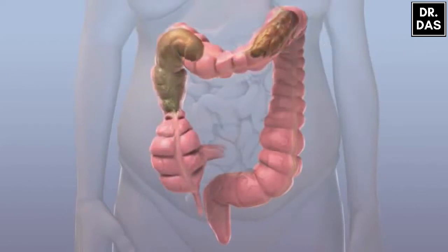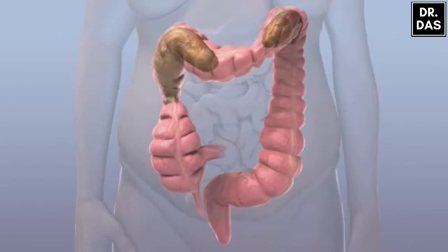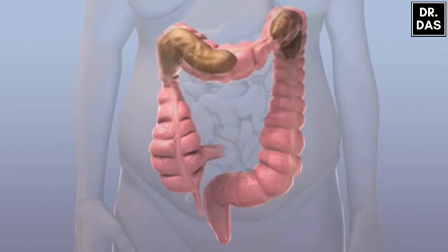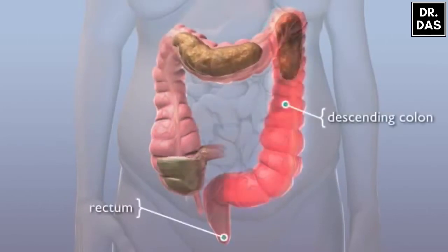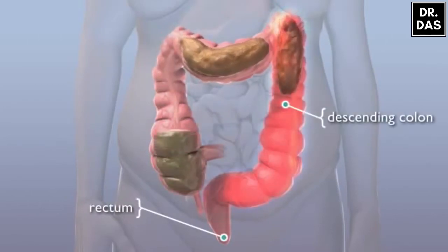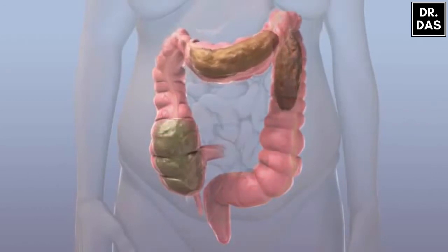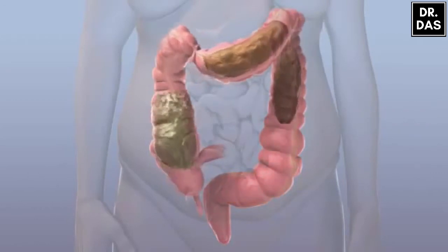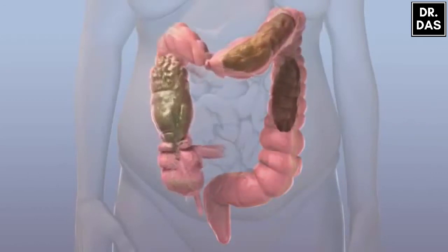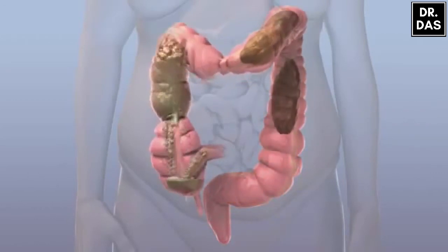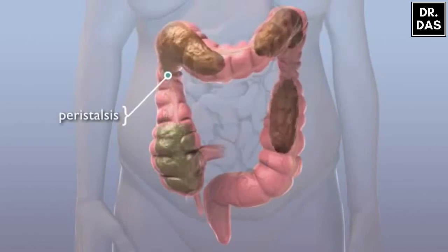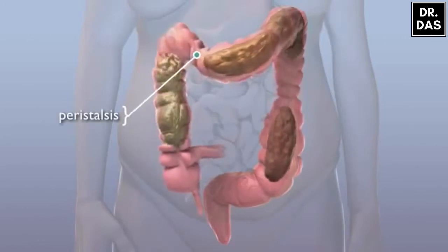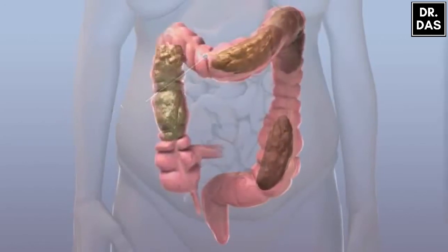As water is lost, stool returns from a liquid into a solid as it goes down toward the rectum in the descending colon. Stool is moved through the sections of the colon by waves of squeezing muscles in an action called peristalsis.